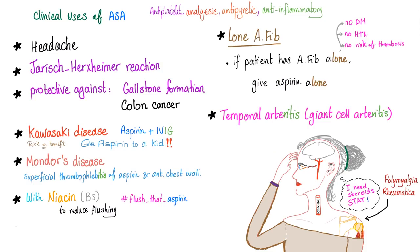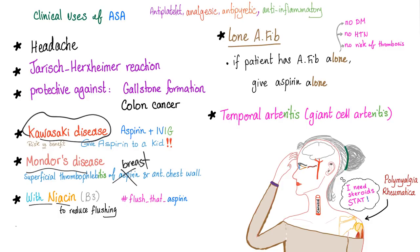Aspirin is used for headache, Jarisch-Herxheimer reaction. It is protective against gallstone formation and colon cancer. Good for Kawasaki disease — it is protective against coronary artery thrombosis. Mondor's disease, which is superficial thrombophlebitis of the breast and anterior chest wall. With niacin, aspirin is used to reduce flushing. Why use aspirin for Mondor's disease? It ends in '-itis,' meaning inflammation — aspirin is anti-inflammatory.